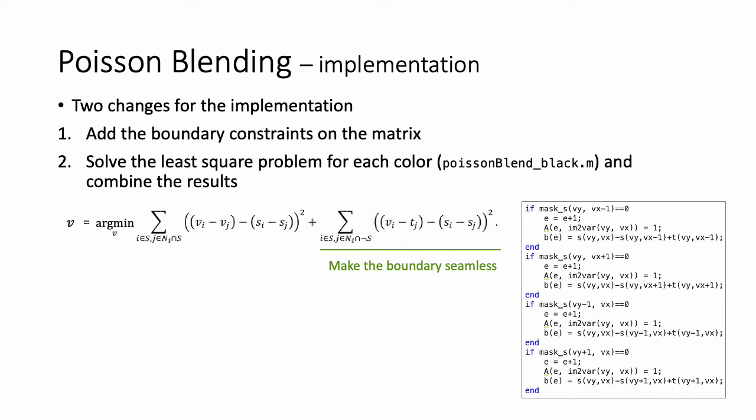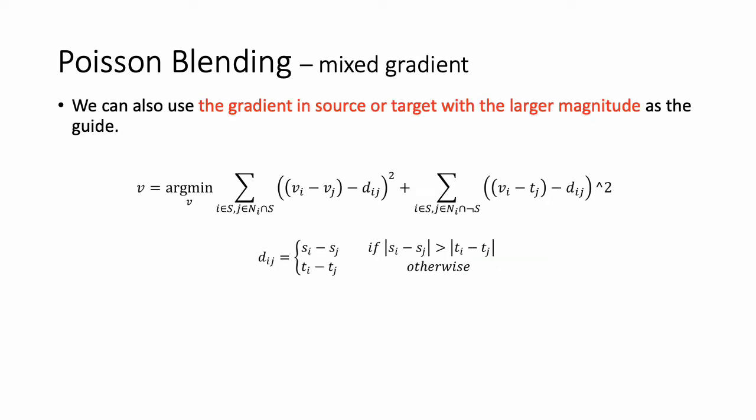There are two changes for the implementation. We should add the boundary constraints on the matrix. The second term in the objective function decreases the gap of pixel intensities near the boundary. Since we now consider RGB-colored images, we should solve the problem for each color channel and combine the results. Furthermore, there is one variant of the technique with different gradient settings — we can also use the gradient in the source or target with a larger magnitude as the guide. It can be useful or not depending on the source image. I will show the effect in the results later.